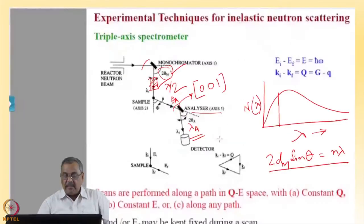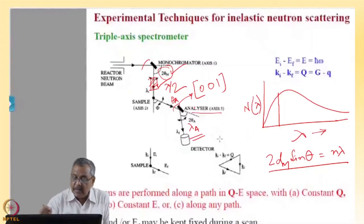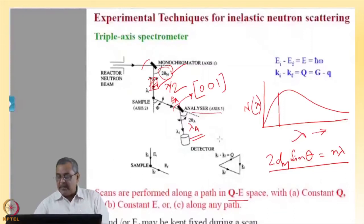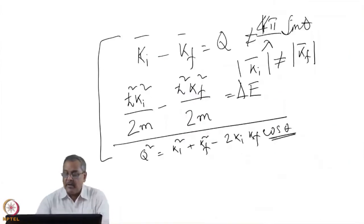These are the equations which will be valid for an inelastic neutron scattering experiment. Then we have to arrange our sample, analyzer, and detector in a way that we can perform the scan along a path in q-E or q-ω space. q is the momentum transfer, E or ℏω is the energy transfer. It can follow a path in constant q or in constant E.